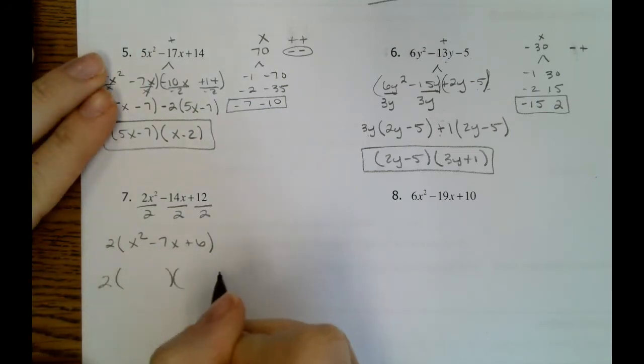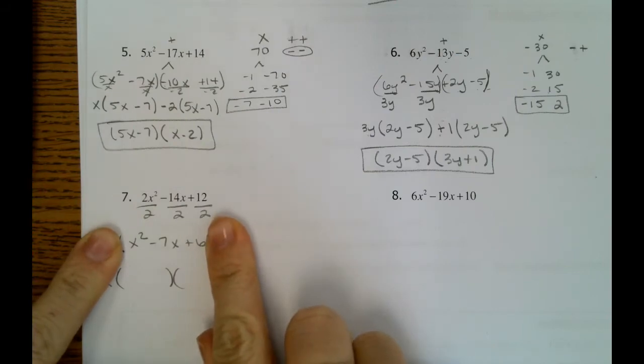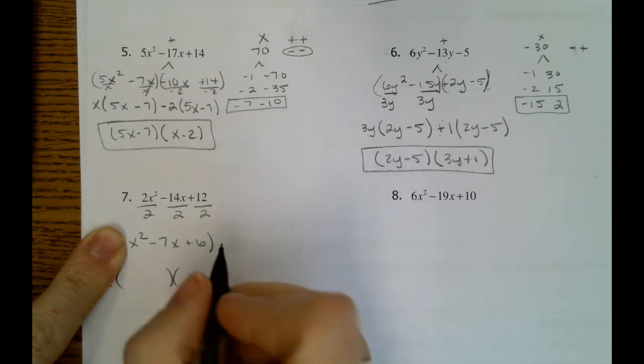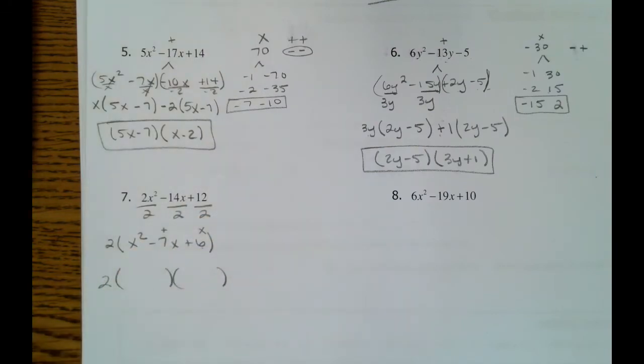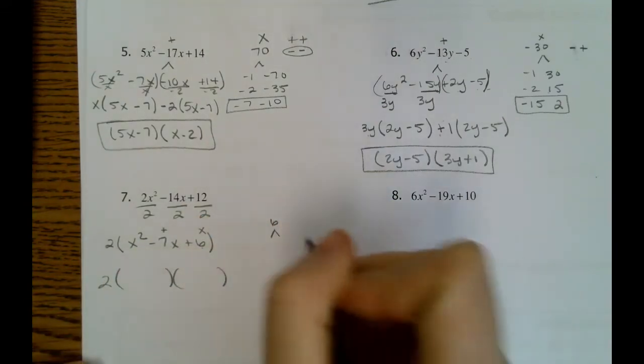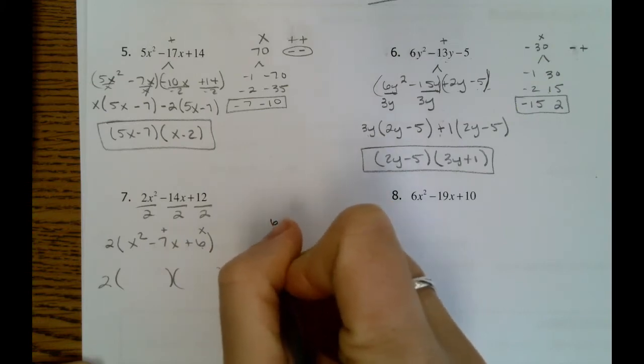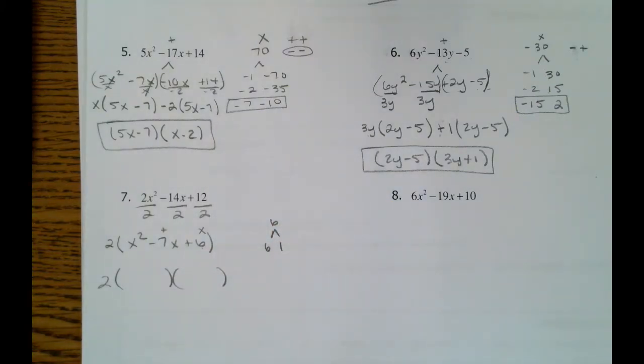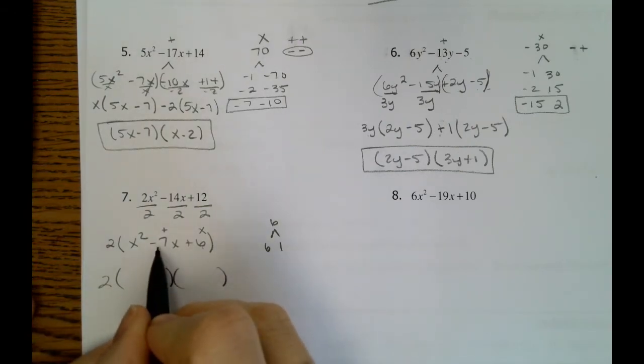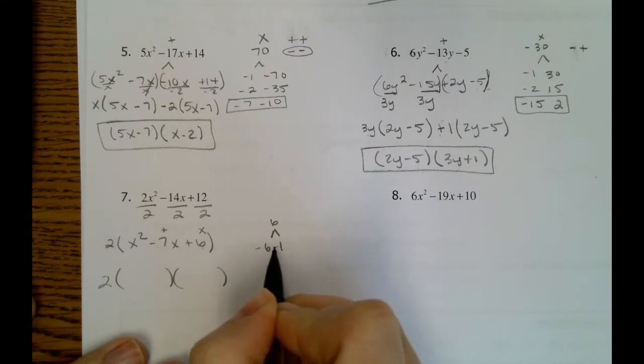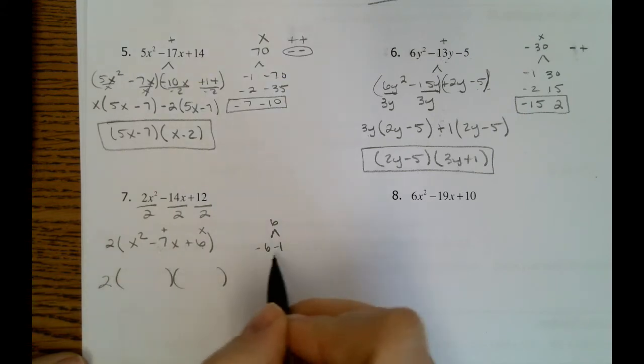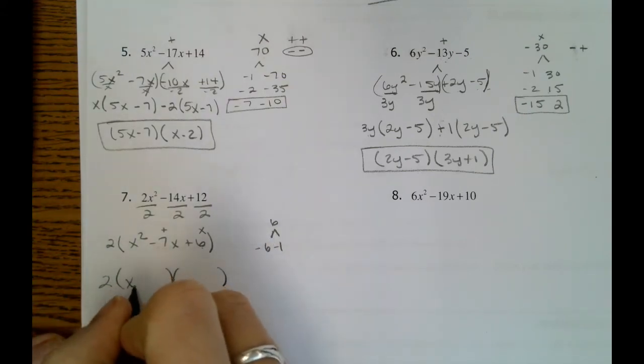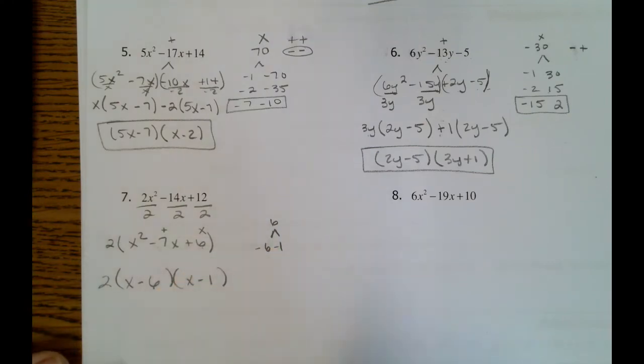So what's really nice is because that x squared has a 1 in front of it, I don't have to do the whole split the middle process. I can find two numbers that multiply to 6 and add to negative 7. So if we multiply to 6, we know 6 and 1 multiply to 6. However, we need to add to a negative 7, and these add to a positive 7. So if we make both of those negative, then that will add to a negative 7, and it will multiply to a positive 6. So our two numbers will be negative 6 and negative 1.